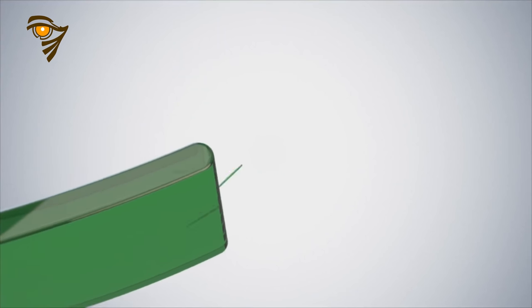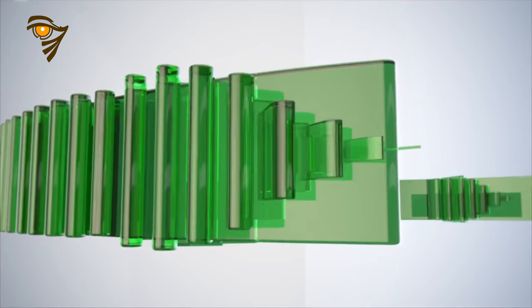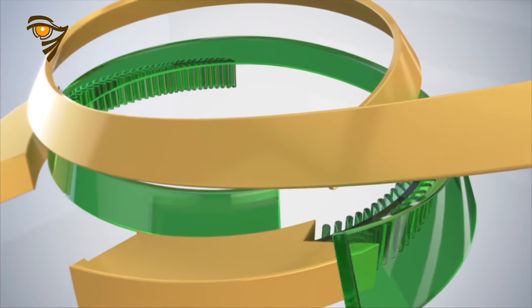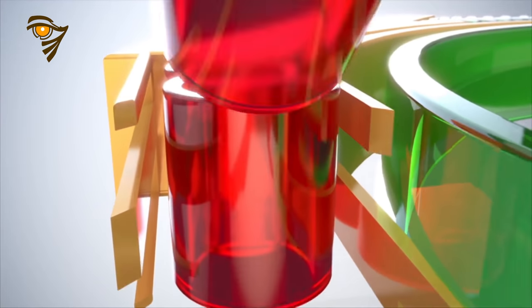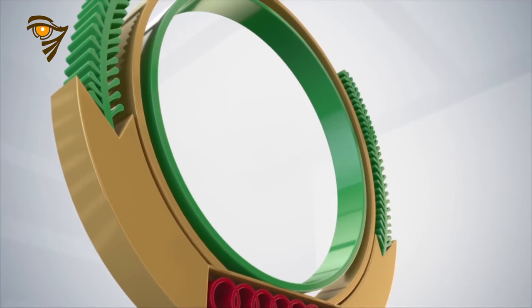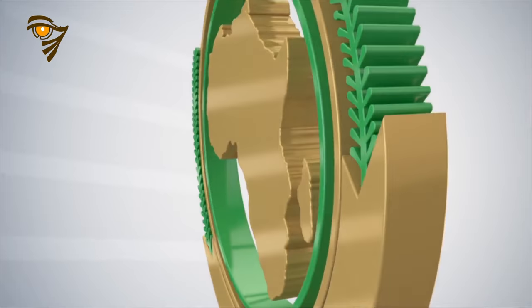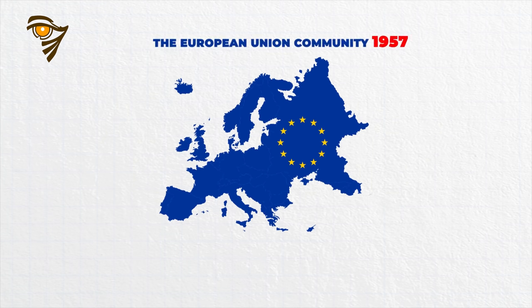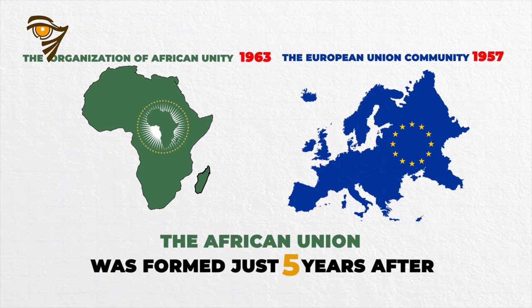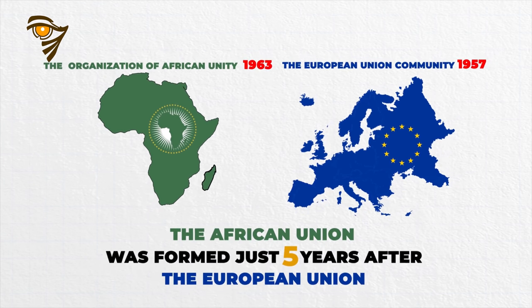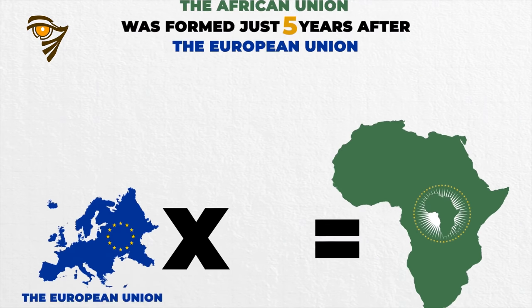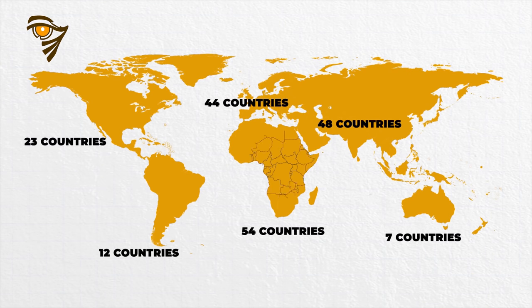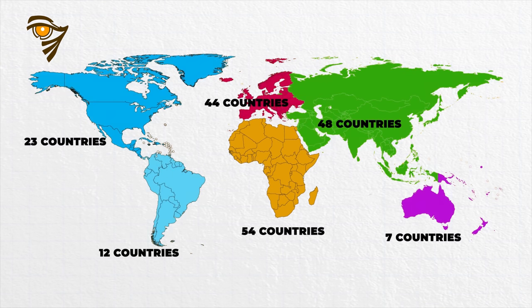It began with a wave of optimism about Africa's future in 1963, when a group of 32 independent African nations created the Organization of African Unity, which later became the African Union. Compared to the European Union, the African Union was formed just five years after the formation of the European Union, but is six times bigger, given that Africa has the most number of countries of any continent in the world.